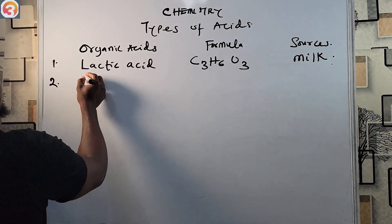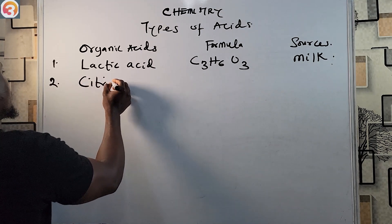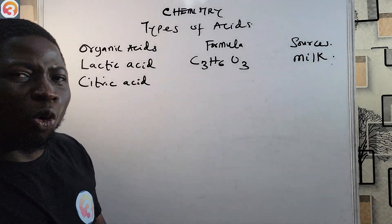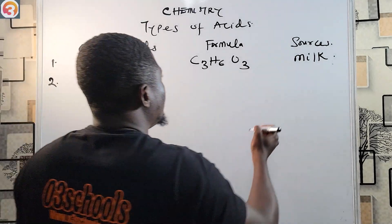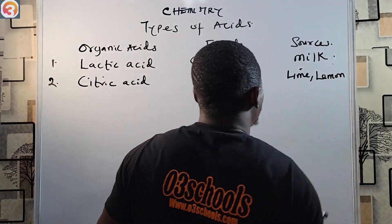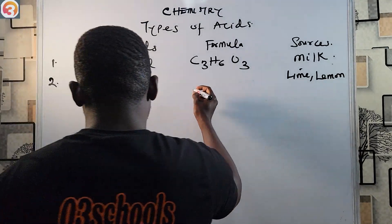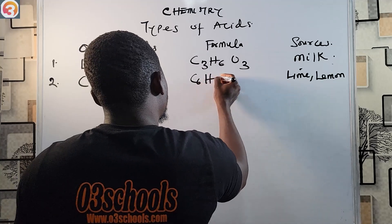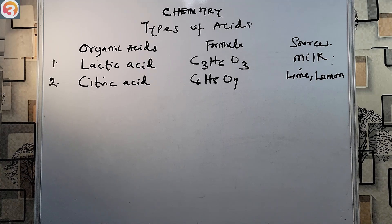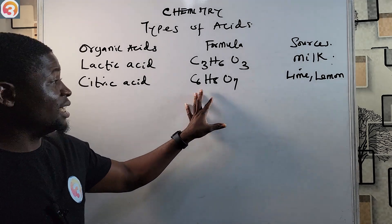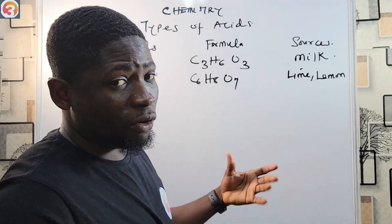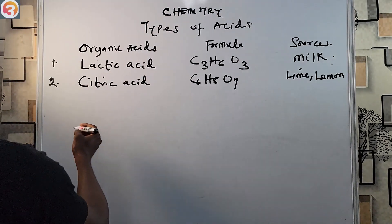Number two: citric acid. Citric acid is gotten from lime or lemon, and it has the chemical formula C₆H₈O₇.